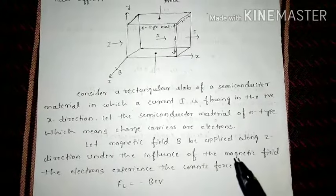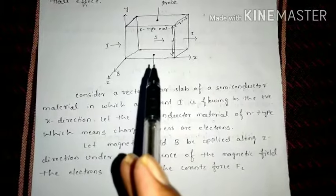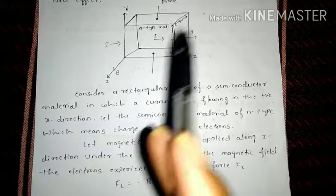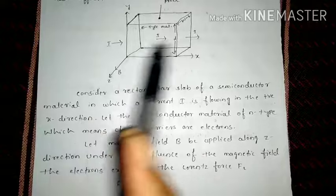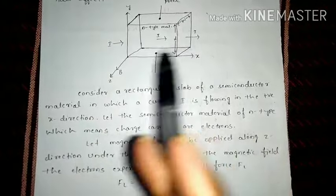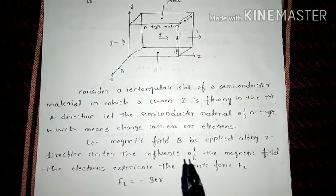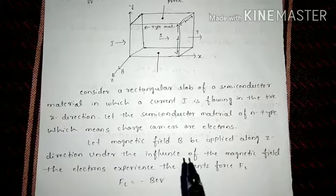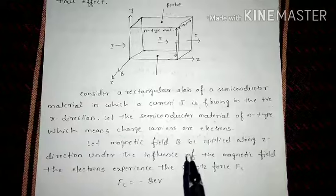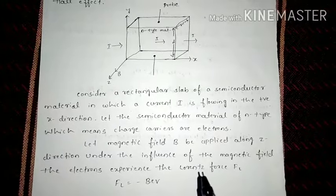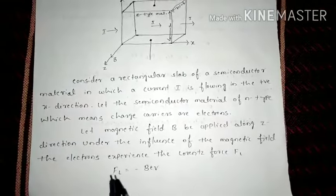Under the influence of the magnetic field, the electrons experience the Lorentz force FL. When you apply an external magnetic field along the Z direction — exactly perpendicular to the direction of current — the electrons flowing in the material will experience a force, which we call the Lorentz force FL.